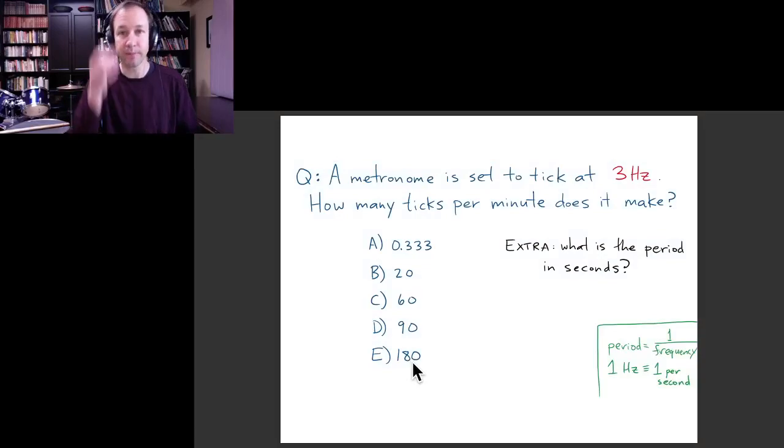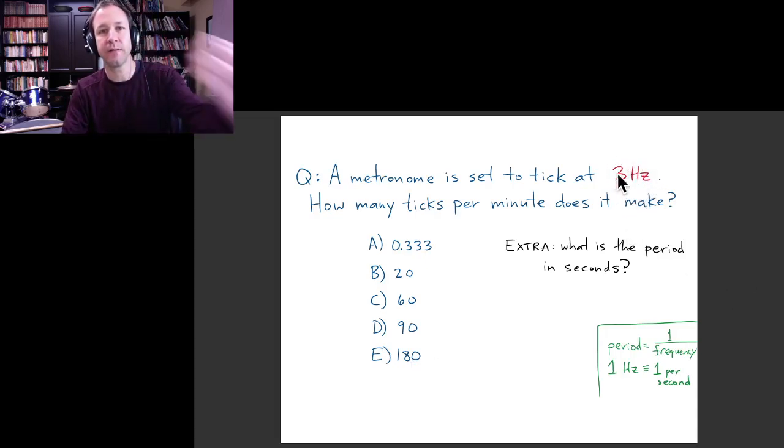What about the period of the metronome? Remember, if we want to go from the frequency, which is 3 per second, to the period, we just have to take the mathematical inverse. So the period is one over the frequency, which is going to be one over three, and the units are seconds. So the period is one-third of a second.